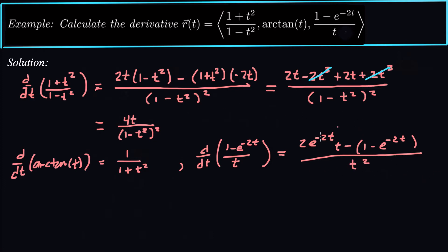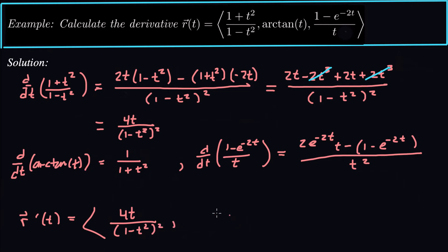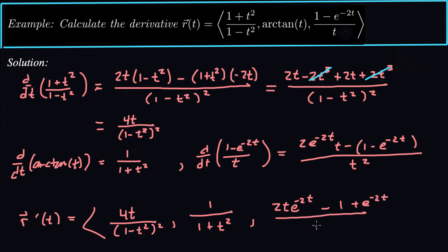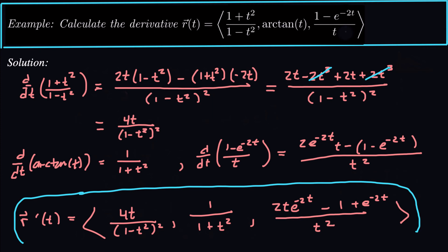We'll simplify that when we write the final answer. So r'(t) equals the vector: 4t over (1 - t²)², comma, 1 over (1 + t²), comma, and simplifying the last term: 2te^{-2t} - 1 + e^{-2t} all over t². And that is our derivative. That's how we calculate the derivative of a vector function — we just do it component by component.